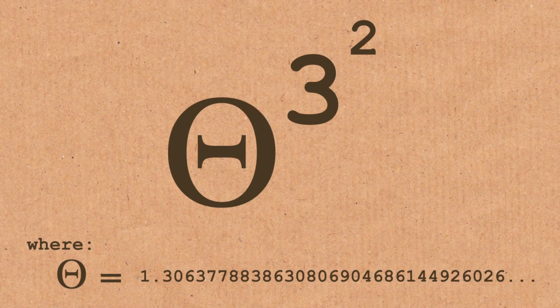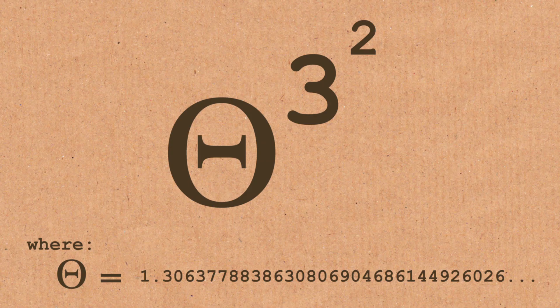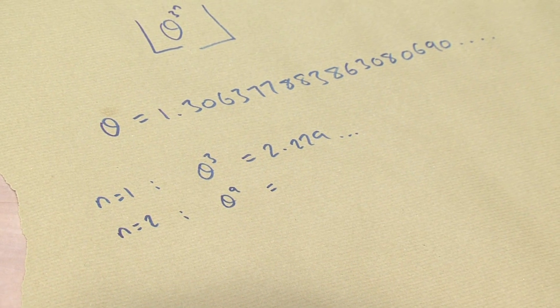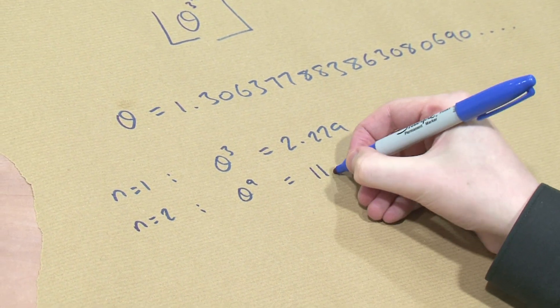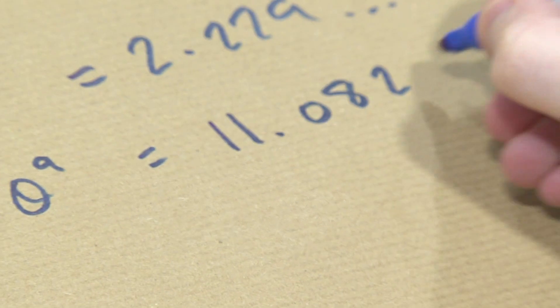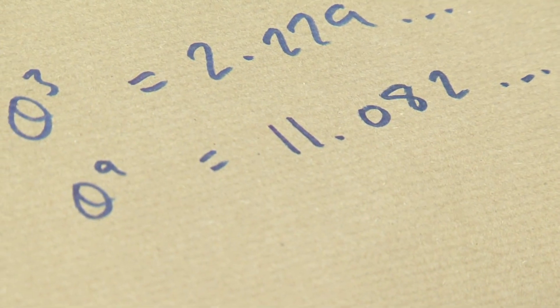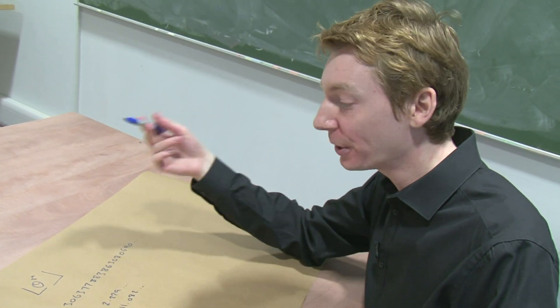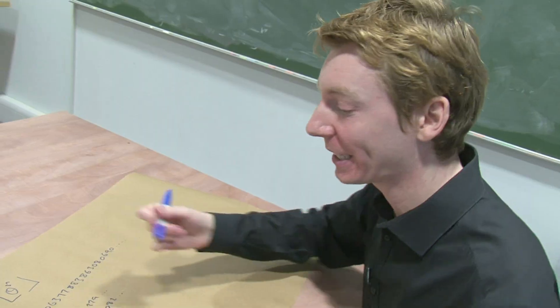Let's do n equals 2. So this is going to be 3 squared, it's theta to the power 9. So take the constant to the power 9, and that is going to be 11.082 something, something. Round it down, you get 11. So you get gaps. It's not consecutive primes, but every one is a prime. You get 11, that's the next one.